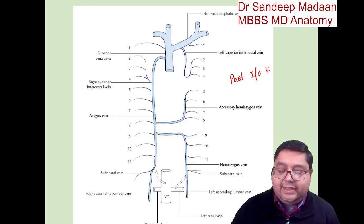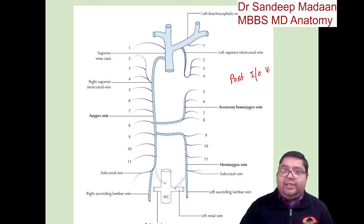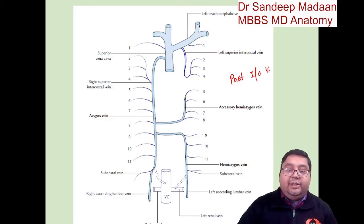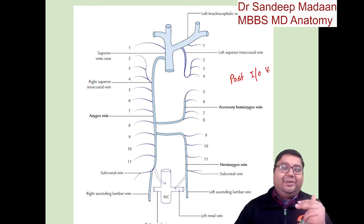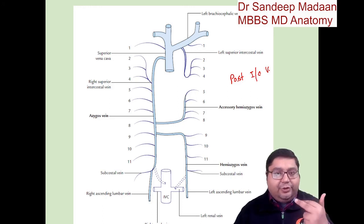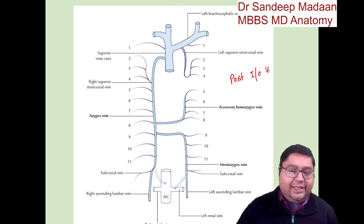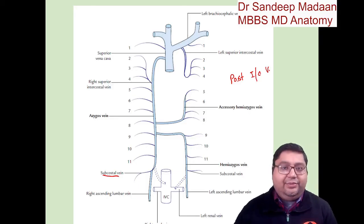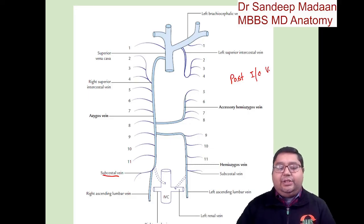These numbers represent the posterior intercostal veins. Between 12 ribs we have 11 posterior intercostal veins. The 12th vein below the last rib is not called intercostal, because to be called intercostal a vein must lie between two ribs. Since there is no 13th rib, the vein below the 12th rib is called the subcostal vein. So we have a subcostal vein which is actually the 12th vein, but it cannot be termed an intercostal vein.